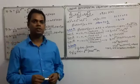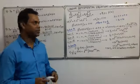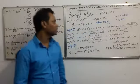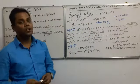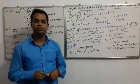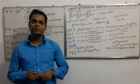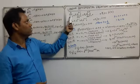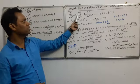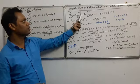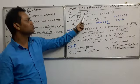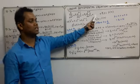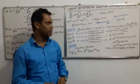As you can see students, the topic of this video is linear differential equations with constant coefficients. Here, the order of the differential equation should be 2 or more, but the degree of the differential equation should be 1. The general form is: d^n y/dx^n + p1 * d^(n-1)y/dx^(n-1) + p2 * d^(n-2)y/dx^(n-2) + ... + pn*y = f(x).